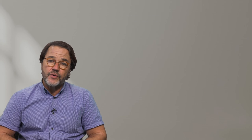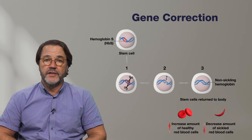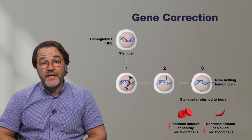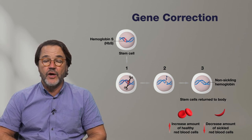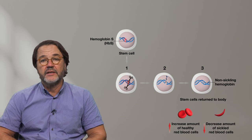In a third approach called gene correction, the variant in the gene that causes sickle cell disease is corrected so that it codes for a non-sickling hemoglobin.